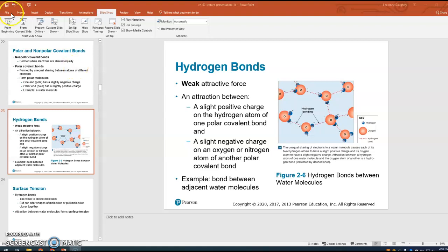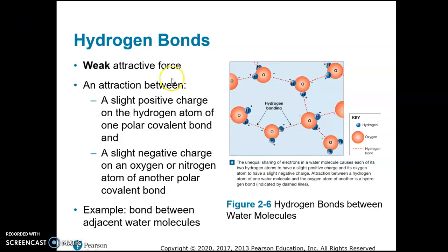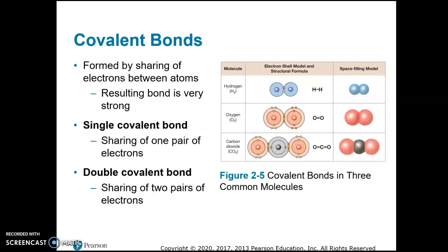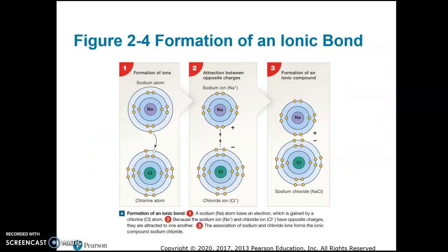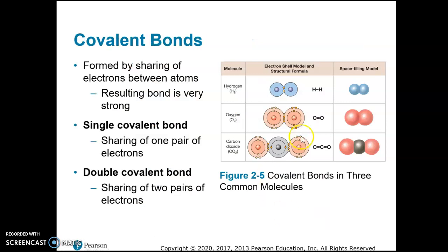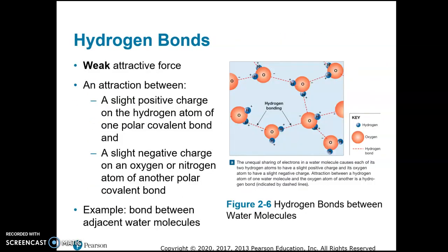This is part three of the chapter two lecture notes; we had left off with hydrogen bonding. It's important to understand that first we learned about ionic bonding. Ionic bonds form compounds like sodium chloride — two atoms chemically bonded together. Then you have covalent bonding, which forms molecules like hydrogen gas (two hydrogen atoms bonded) and carbon dioxide (one carbon and two oxygen atoms). Ionic and covalent bonding represent strong attractions of atoms to each other, forming compounds and molecules, but hydrogen bonding is weak attractions between molecules.